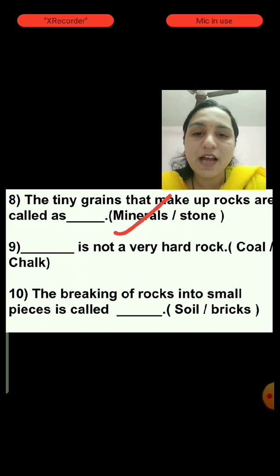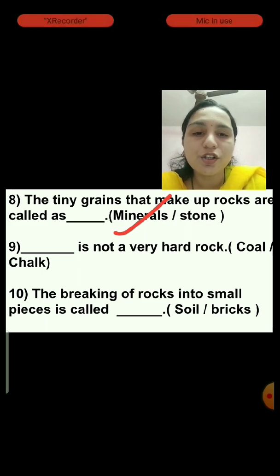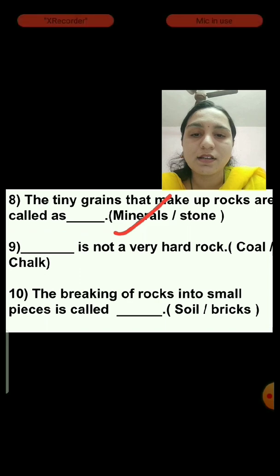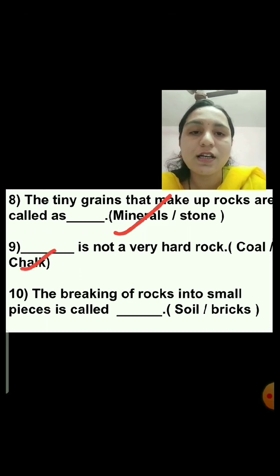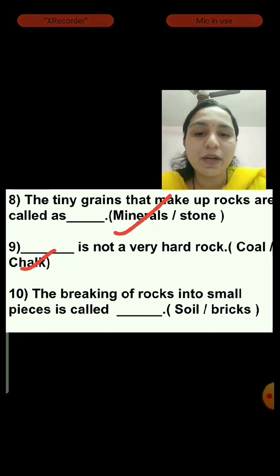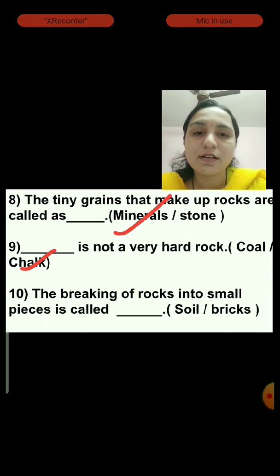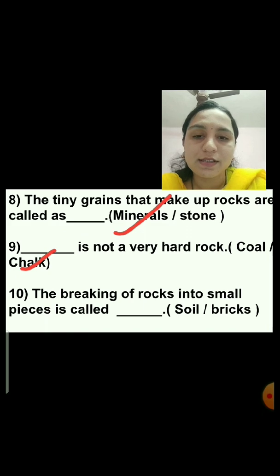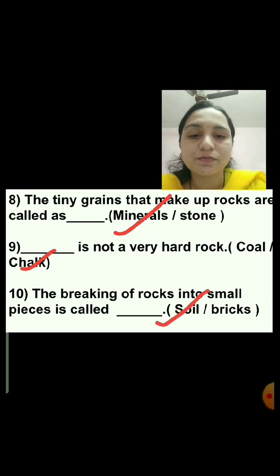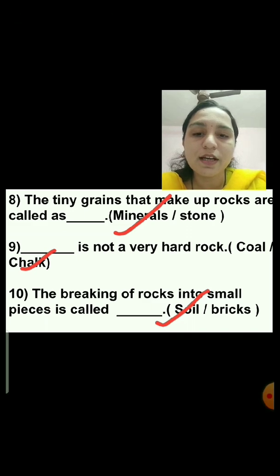Question number 9: Dash is not a very hard rock — coal or chalk? The answer is chalk. Chalk is a soft rock. Question number 10: The breaking of rocks into small pieces is called as — soil or bricks? The answer is soil. So, we will choose the answer soil.